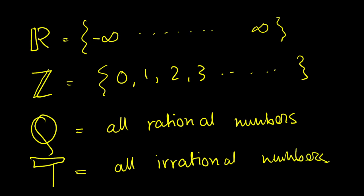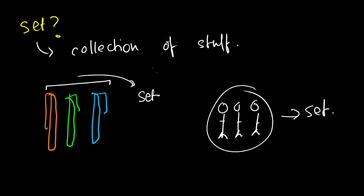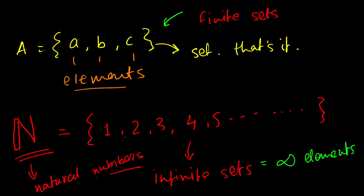Please forgive my bad handwriting, okay. Anyway, to review, what is a set? A set is a collection of stuff, and this stuff we can call as elements, okay. Anything, we can have a set of anything, okay.